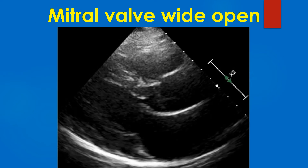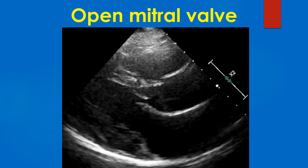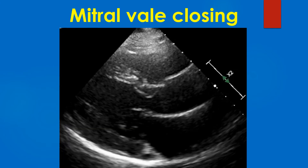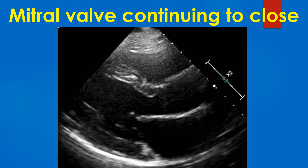The mitral valve is seen to be widely opened and the aortic valve closed. The anterior mitral leaflet almost reaches the interventricular septum, and the wide mitral orifice is visible. In one more frame with mitral valve opened and aortic valve closed, the mitral valve then starts closing and moves towards the posterior leaflet, moving further posteriorly.